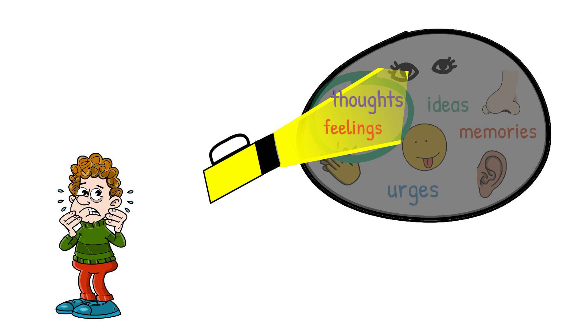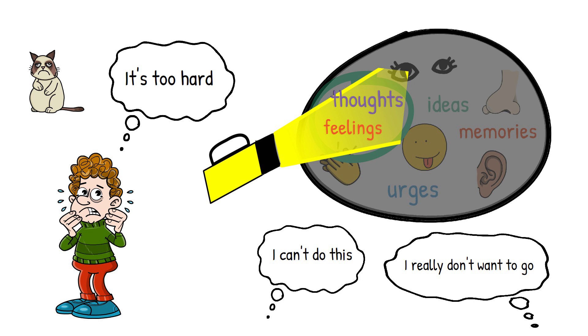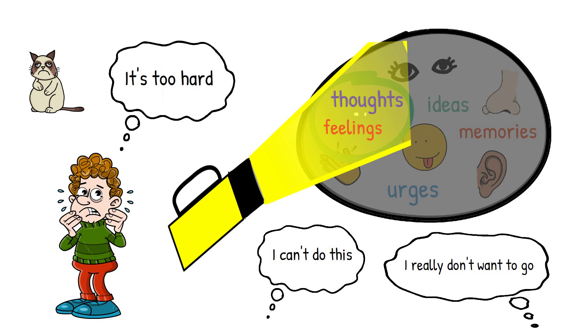How about when you're feeling worried? That torch would shine on feeling worried and then it would also shine brightly on worry thoughts. When the torch shines in this way life can get pretty dreadful and the stronger the torch shines on these difficult thoughts and feelings the brighter they seem to get.